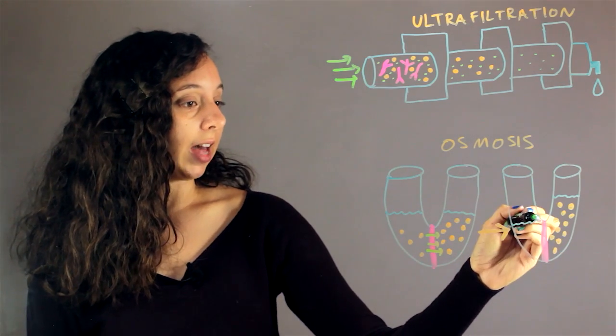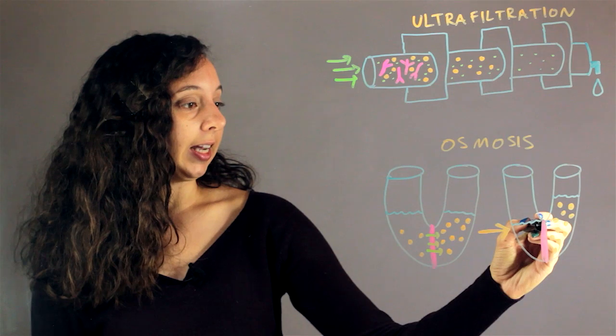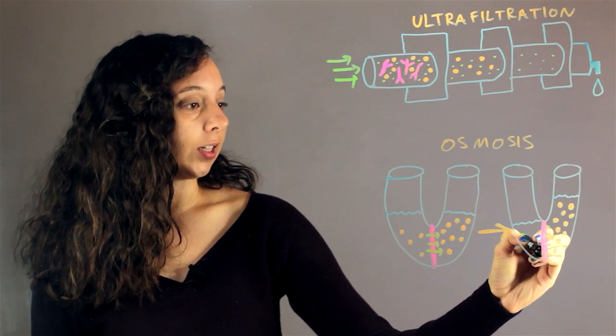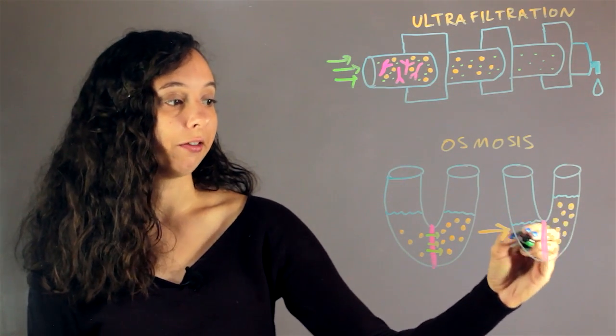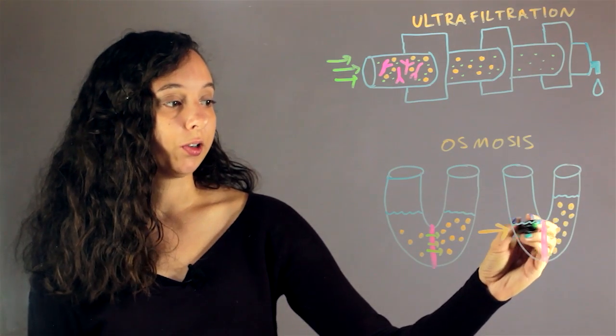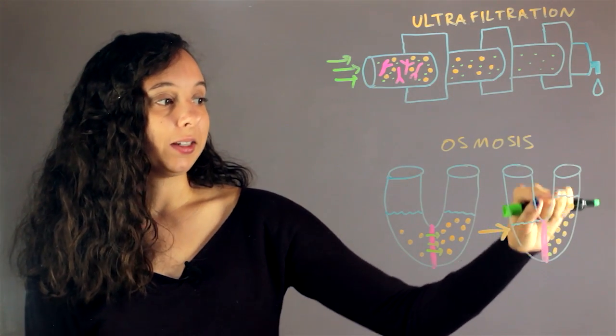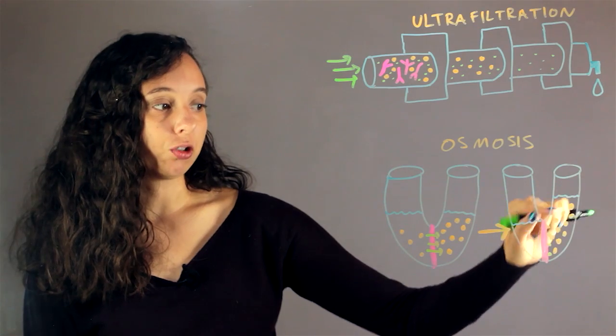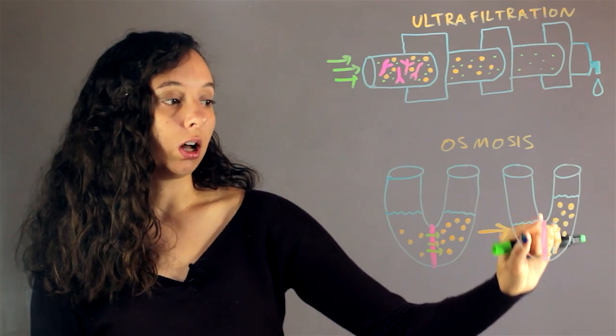So, because of that, they're actually lining up on this membrane, and they block some of the water molecules that can go back and forth from returning. So as a result, the water level rises here, because the water is pretty much trapped here, because it's all clogged here, and this is osmosis.